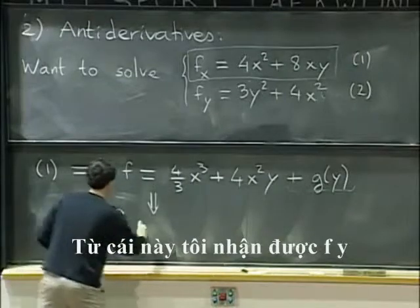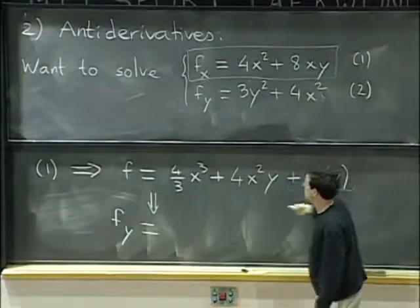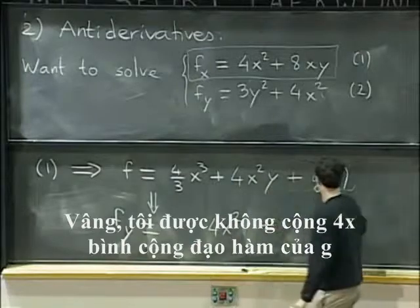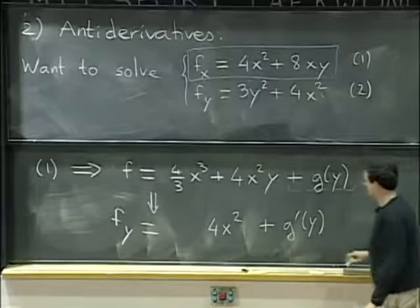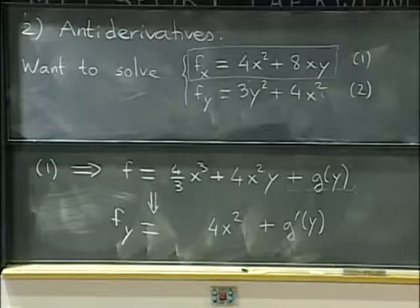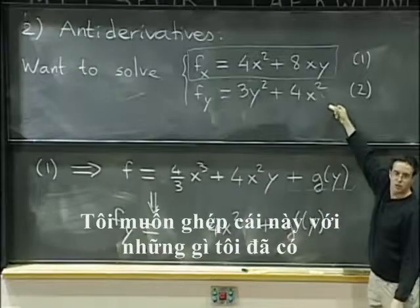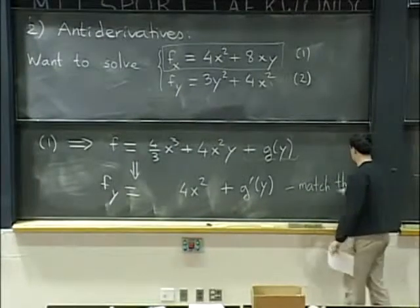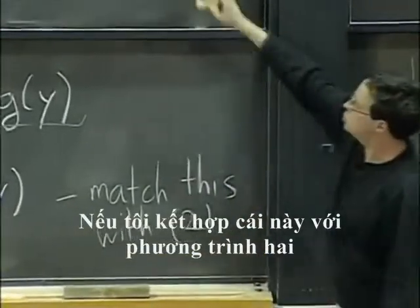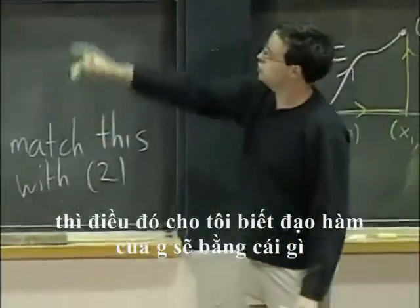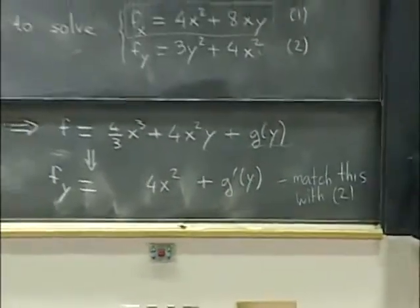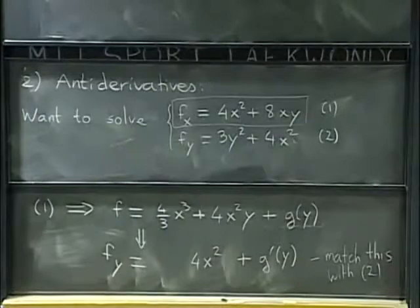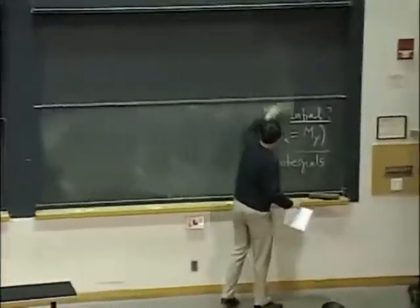So what do I get if I differentiate this with respect to y? Well, I get 0 plus 4x squared plus the derivative of g. So I would like to match this with equation two with what I had. So if I match this with equation two, then that will tell me what the derivative of g should be.